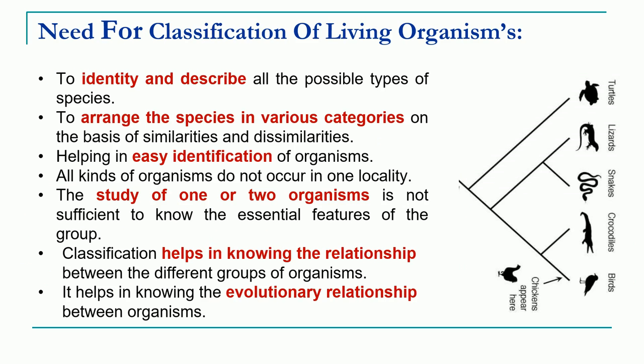The first question that arises is: why is there a need for the classification of living organisms? We all know the enormous diversity of living organisms. It is very essential to identify and describe all possible types of species living on earth. It is also necessary to arrange these species in various categories or groups on the basis of similarities and dissimilarities. Taxonomy and classification systems help in the easy identification of organisms.